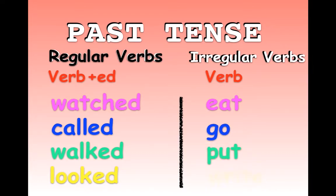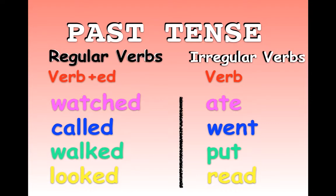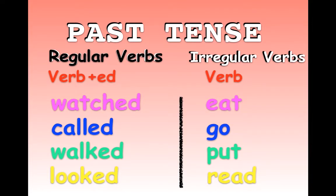After removing the 'to,' I'm left with: eat, go, put, read. For irregular verbs, the spelling might change — for example, eat becomes ate, go becomes went. For some irregular verbs nothing changes: put stays put. And some verbs are trickier — nothing changes in spelling but the pronunciation changes, for example read becomes read. Remember: regular verbs just add '-ed'; irregular verbs might change spelling, stay the same, or just change pronunciation.